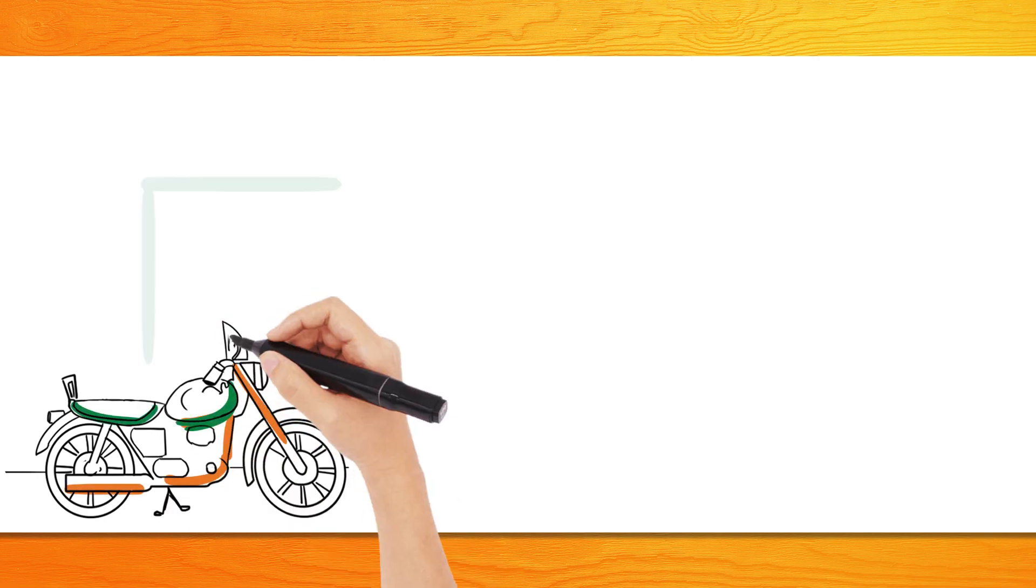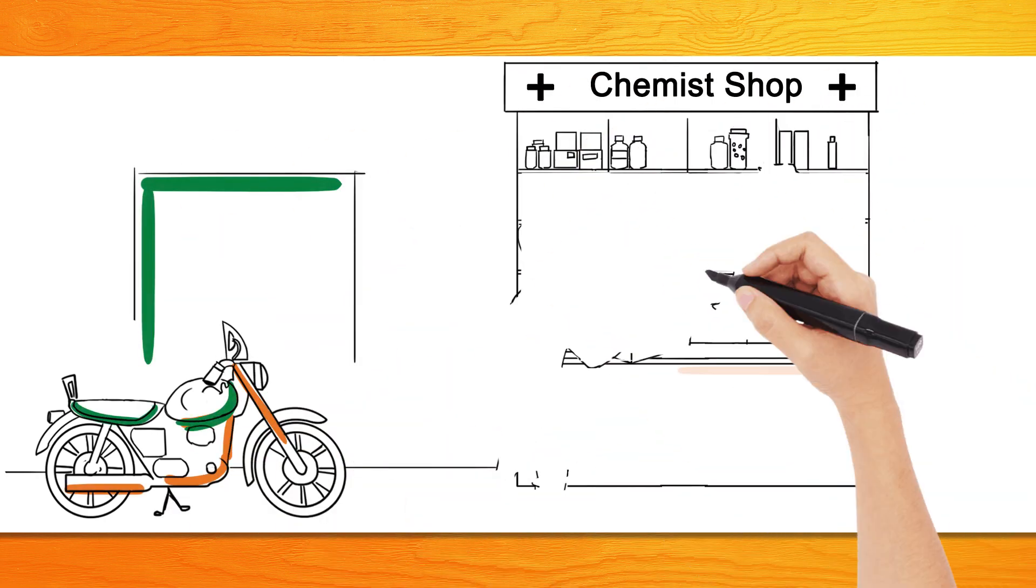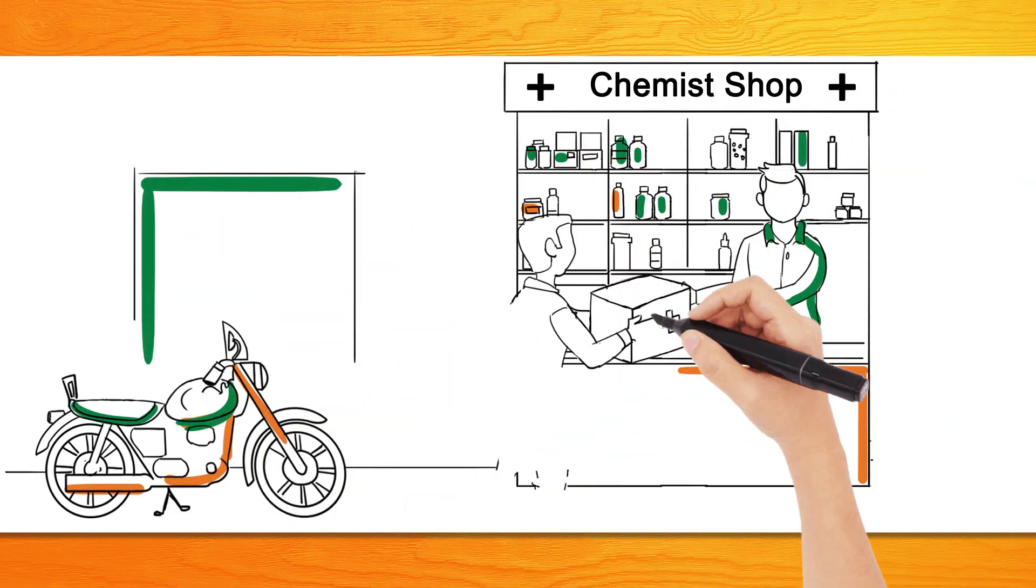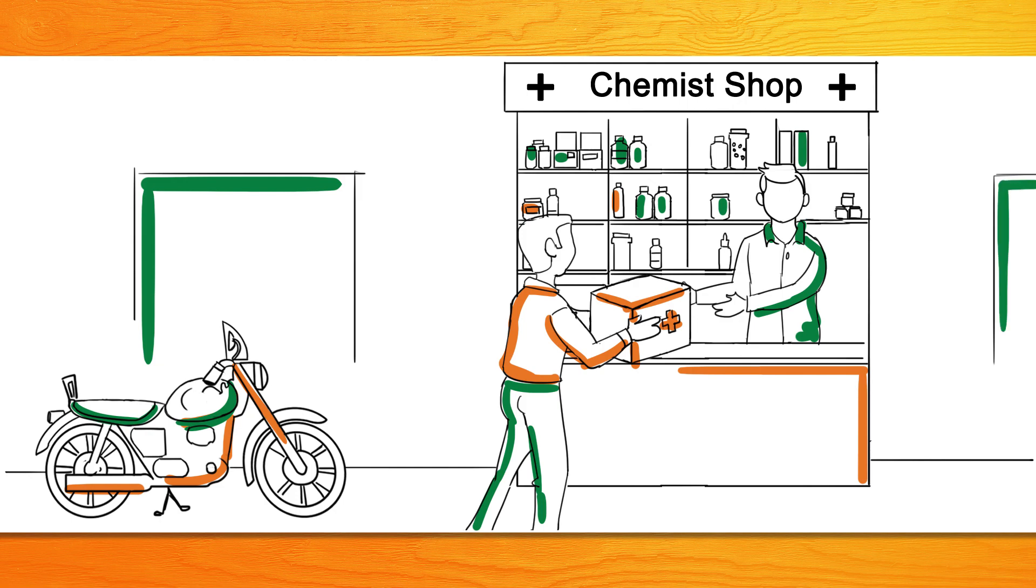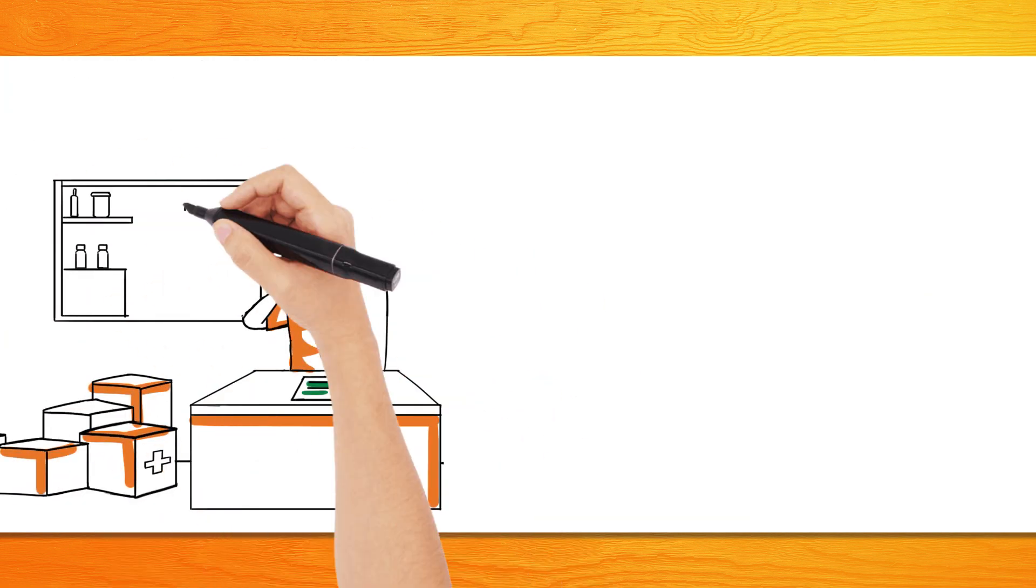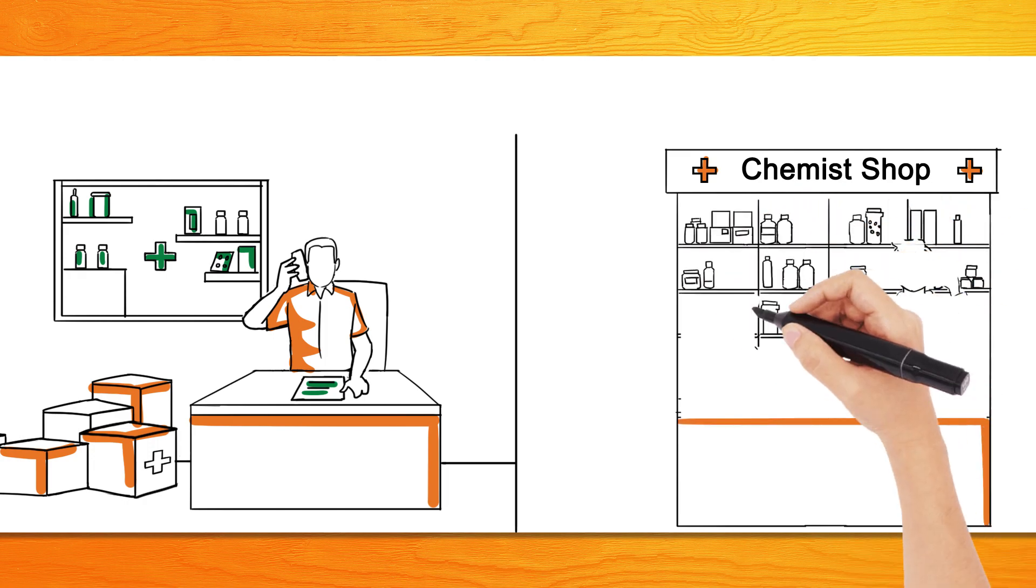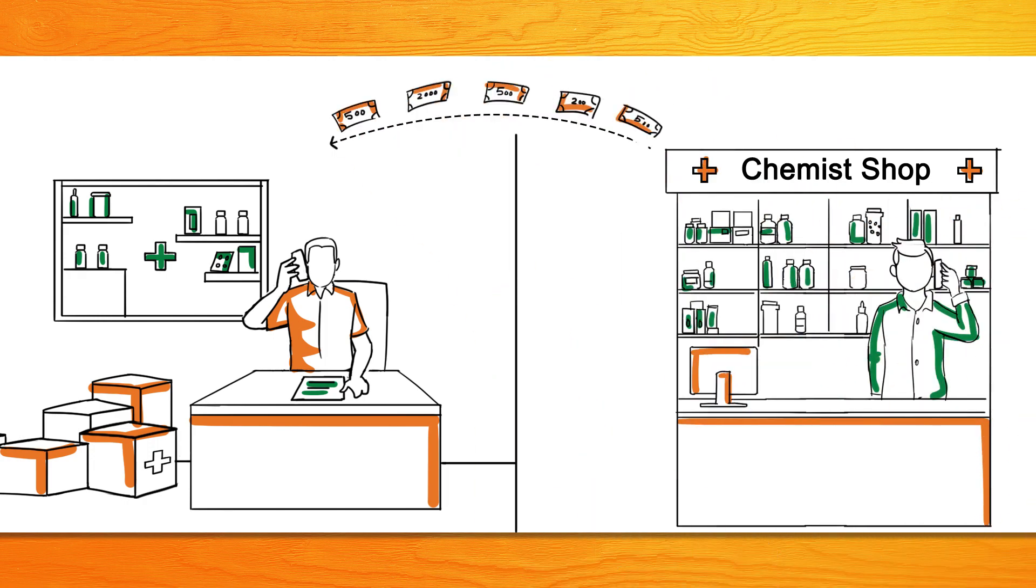Each feet on street FOS gets paid for taking orders for pharmaceutical products from chemists, delivering the products ordered, and collecting payments from the chemists post a credit period of 7 to 10 working days approximately.